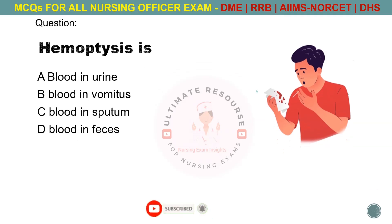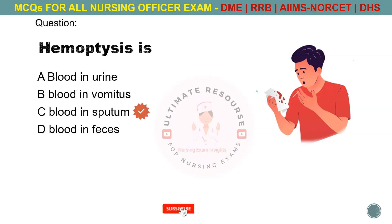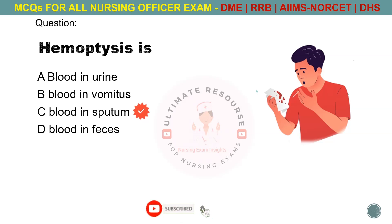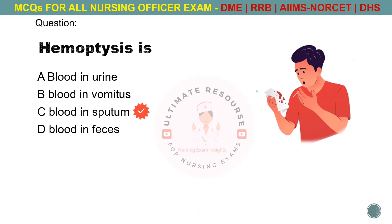Hemoptysis is. Options are A. Blood in urine, B. Blood in vomitus, C. Blood in sputum, D. Blood in feces. The answer is C. Blood in sputum. Let's explore the other options. Blood in urine is known as hematuria. Blood in vomitus is known as hematemesis. And blood in feces is called hematochezia.